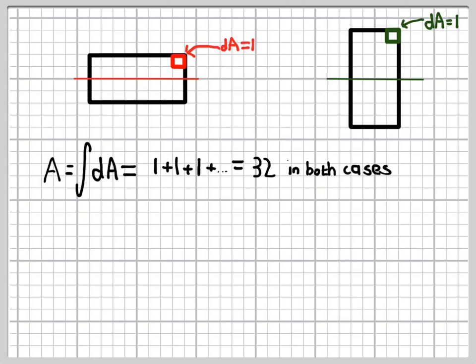Now, clearly, this cross-sectional property, the area, isn't what we need here, because we know the beams will behave differently when we bend them. But the area is the same in both cases. And so this is where the second moment of area comes in.